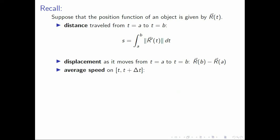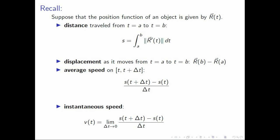We also learned about the average speed on the interval t to t plus delta t, and this is the ratio s of t plus delta t minus s of t, all over delta t. Meanwhile, the instantaneous speed is given by the limit as delta t goes to zero of our average speed. Notice that this limit is precisely s prime of t, or ds over dt, and ds over dt is precisely the magnitude of r prime of t.